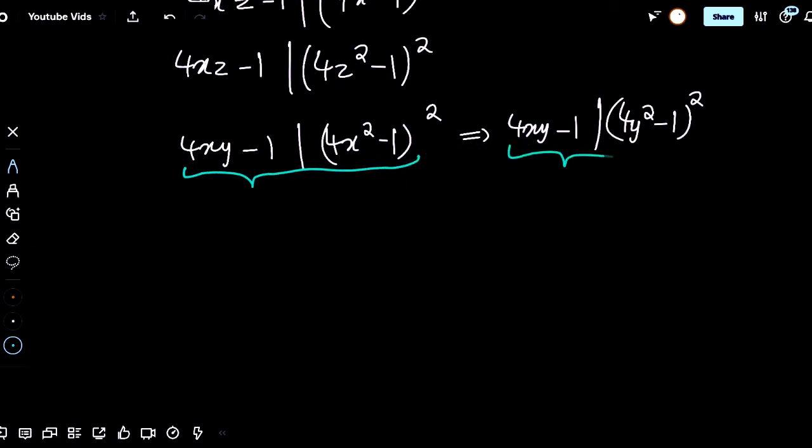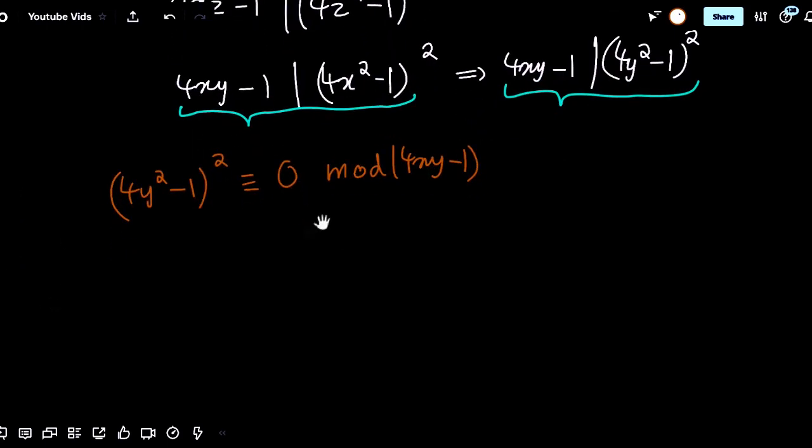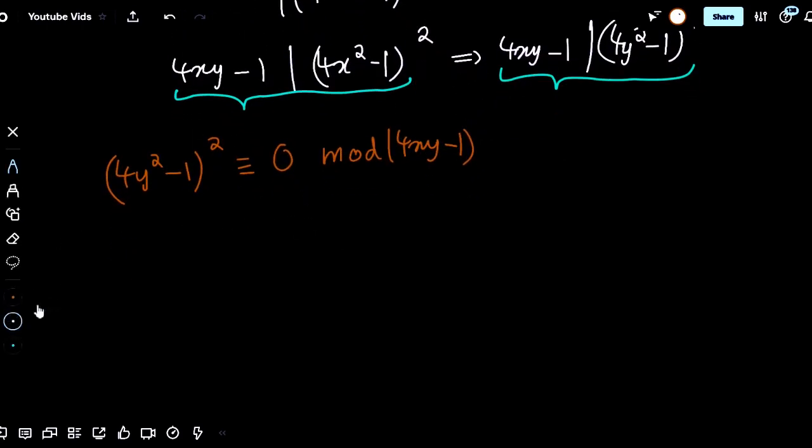In other words, if I could maybe show that 4y squared minus 1 whole squared is congruent to 0 mod 4xy minus 1, perhaps that would be ideal. The non-trivial trick is to replace the 1 here in 4y squared minus 1 with something.